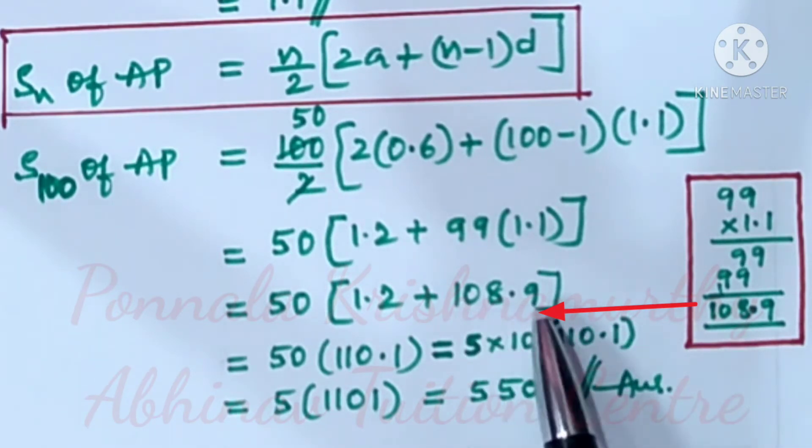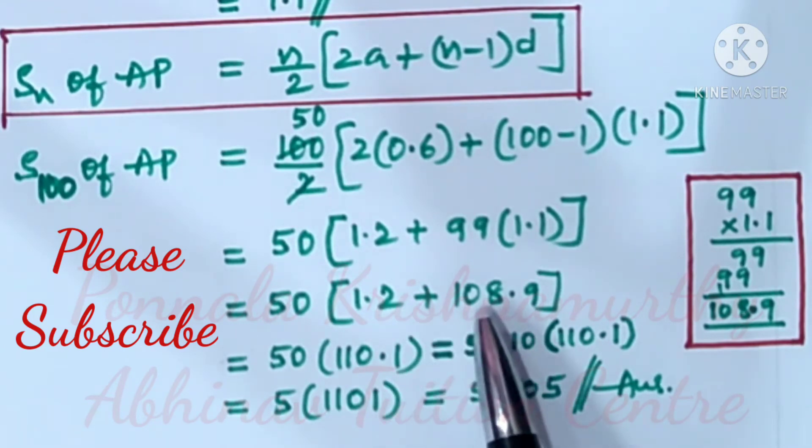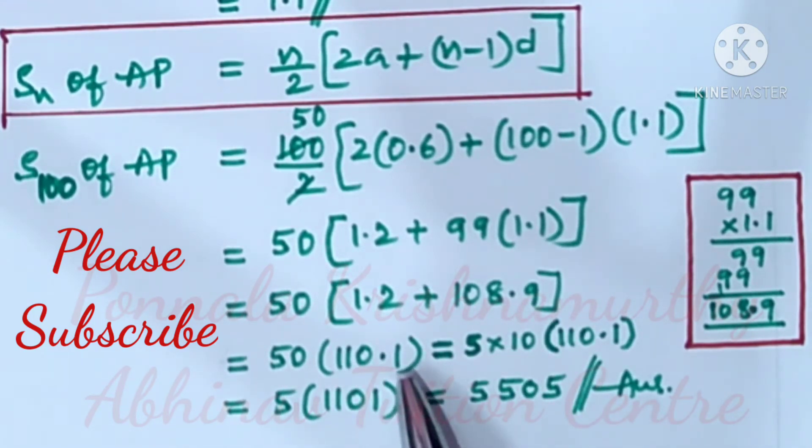So, we write 108.9 here is equal to 50 into 1.2 plus 108.9 is 110.1. That is equal to 50 can be written as 5 into 10 into 110.1. Then this 5 is here.